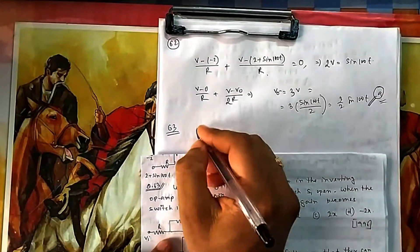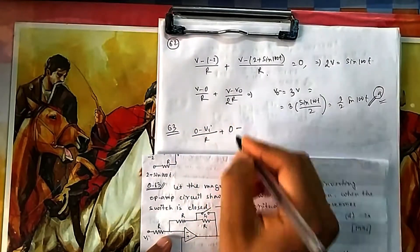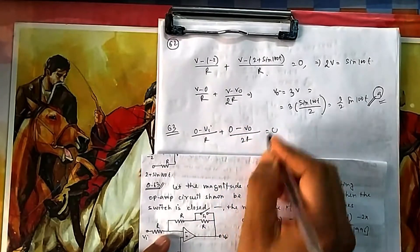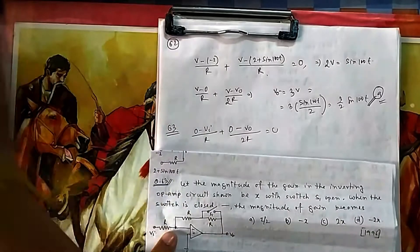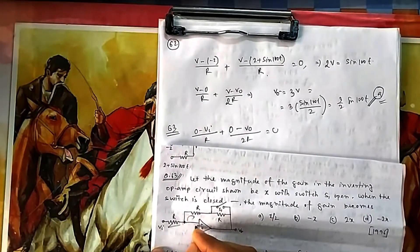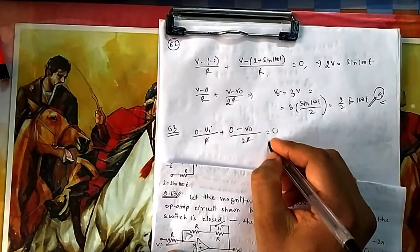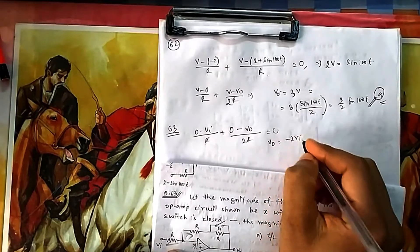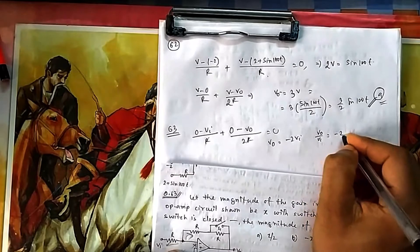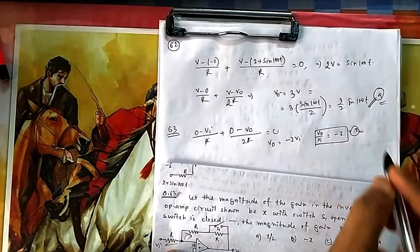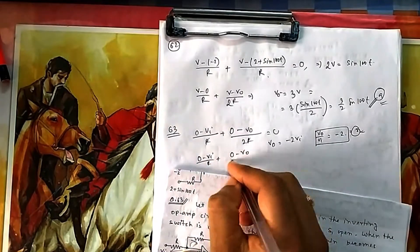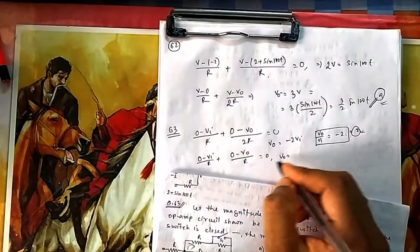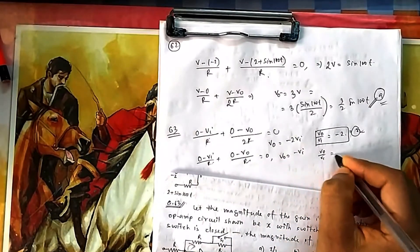With S1 open, taking nodal at V−(= 0): (0 − Vi)/R + (0 − V0)/2R = 0. Solving, R cancels and V0 = −2Vi, so V0/Vi = −2. The magnitude of gain X = 2. When S1 is closed, the feedback becomes R (not 2R): (0 − Vi)/R + (0 − V0)/R = 0, giving V0 = −Vi, so V0/Vi = −1.